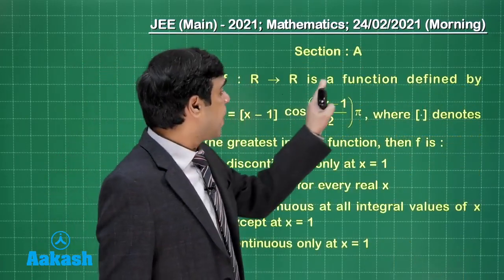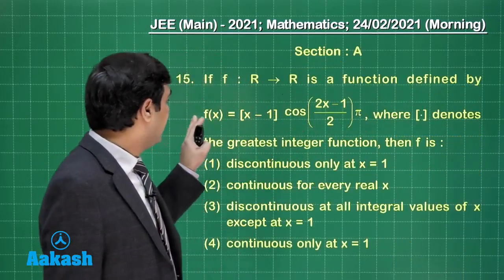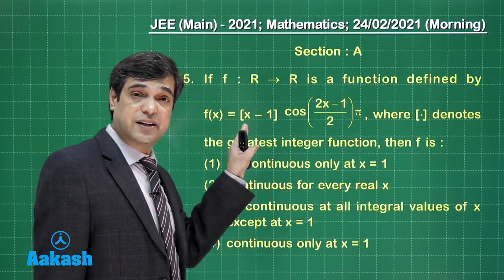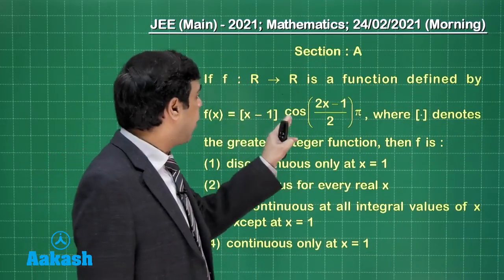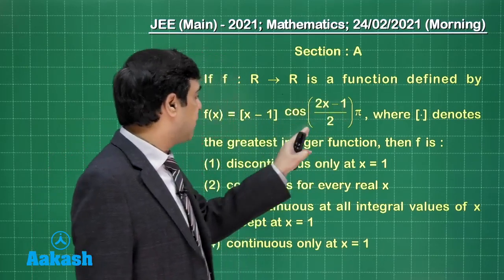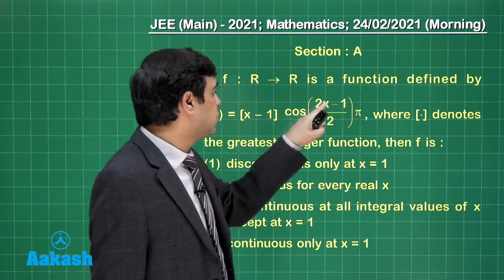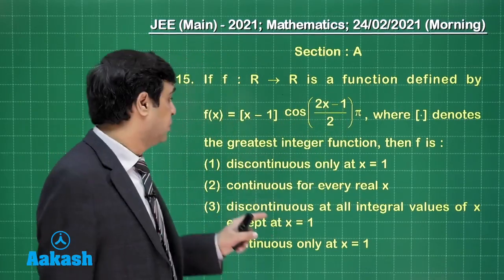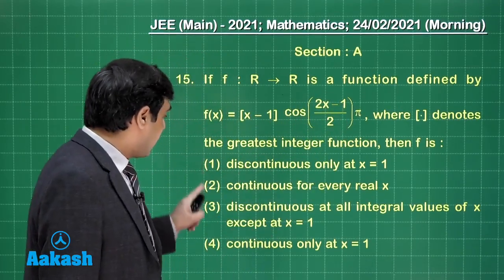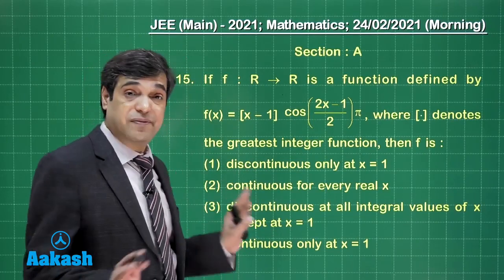Let's take up the next one. If f from R to R is a function defined by f(x) equals greatest integer of [x minus 1] cos[(2x minus 1) divided by 2] into pi, or in other words you can say cos[(2x minus 1) into pi by 2]. Now question is talking about continuity and discontinuity at different points.